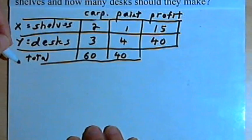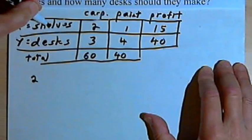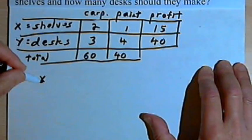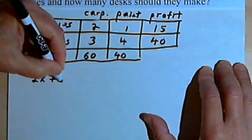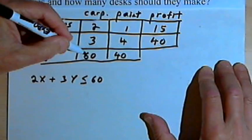Now let's take the information in the table and make some inequalities. In terms of carpentry time, if the shelves take 2 hours, then the total amount of time for the shelves they make would be 2 times x, 2 hours times the number of shelves. When they make a desk, it takes 3 hours, so that's going to be 3 times y, 3 times the number of desks they make. And that has to be less than or equal to 60 hours, the total amount they have available.